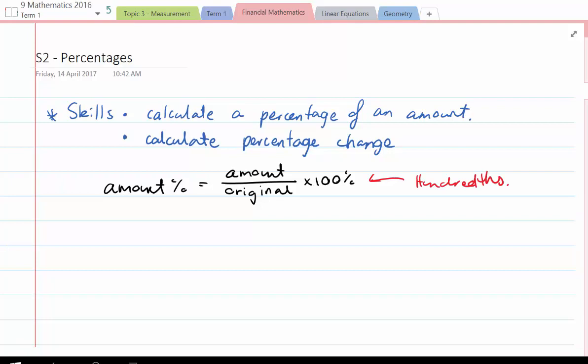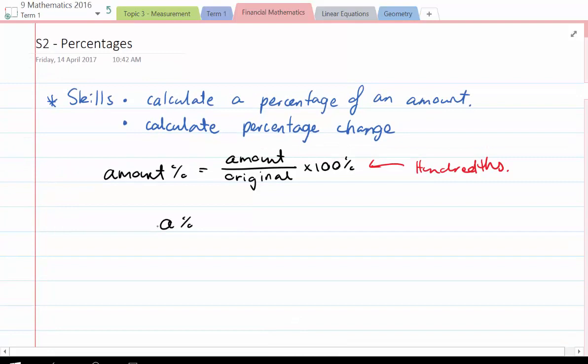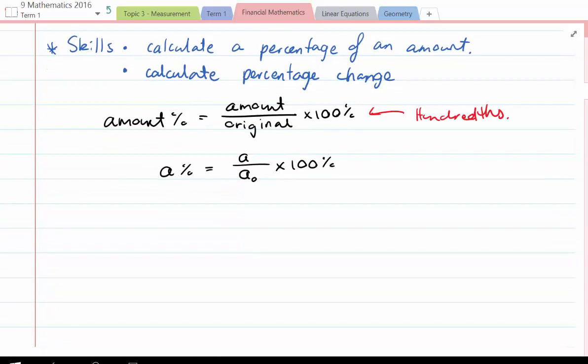If we want to simplify this down so we don't have to write quite as much, we can write that as percentage of an amount is the amount over the original amount, a subscript 0, multiplied by 100%. Nice simple rule there.